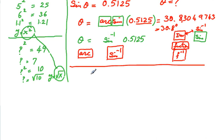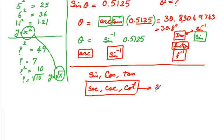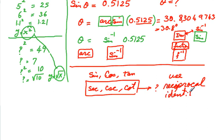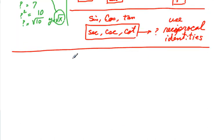Most calculators deal only with the primary trig functions: sine, cosine, and tangent. The other three — cosecant, secant, cotangent — don't have dedicated buttons. When you need those, use the reciprocal identities to handle them; you have to do a little bit of work yourself. Use reciprocal identities.